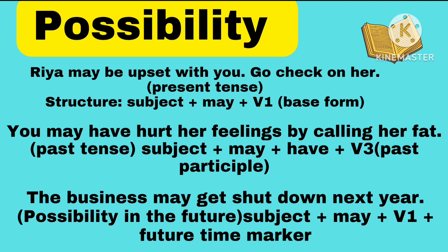May shows possibilities. When you are using 'may', it means you are showing the possibilities. Like: 'May Rhea be upset with you? Go check on her.' So this is a possibility that Rhea may be upset, right? It's not sure that Rhea must be upset, but Rhea may be upset. So here it is in present tense. The structure is: subject + may + V1, where V1 means the base form of the verb.